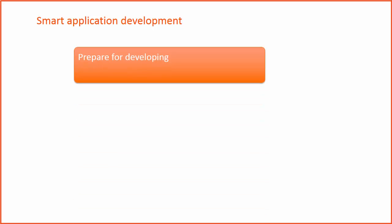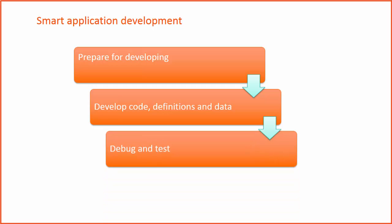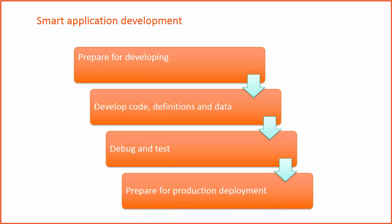A typical smart application development consists of preparing for development, which includes understanding the design of the application and setting up the environment for developing the application. The next stage is developing the code, definitions, and data required. Next, debugging and testing the application, and finally preparing for deploying the application.